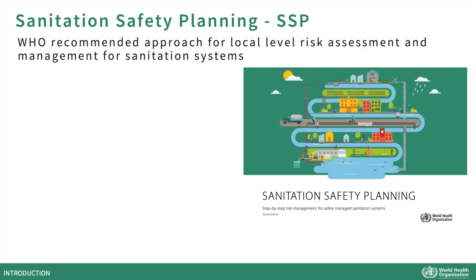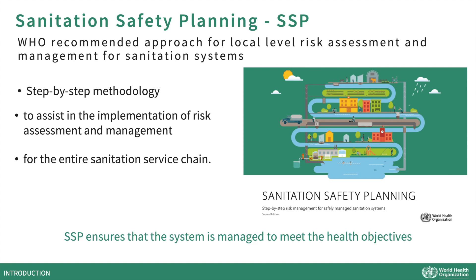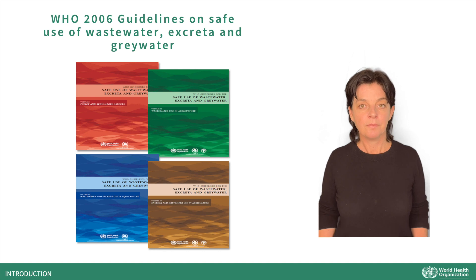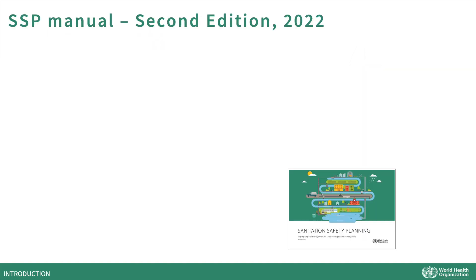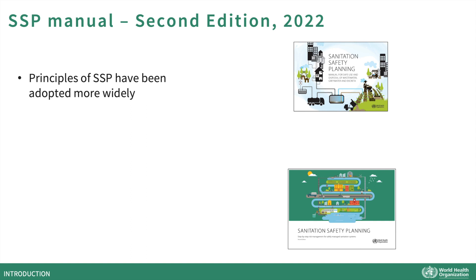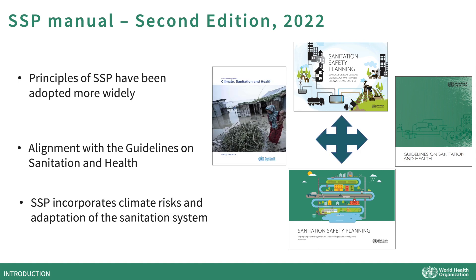SSP is the WHO recommended approach for local level risk assessment and management for sanitation systems. It presents a step-by-step methodology to assist in the implementation of risk assessment and management for the entire sanitation service chain. SSP ensures that the system is managed to meet the health objectives. Originally, the SSP manual was published in 2015. In the 2022 edition, the principles of SSP have been adopted more widely and aligned with the guidelines on sanitation and health, and updated to incorporate climate risks and adaptation in the sanitation system.